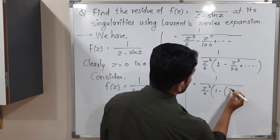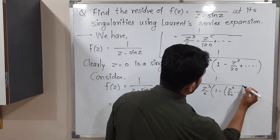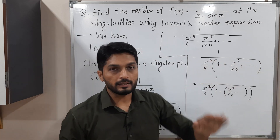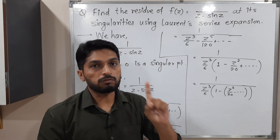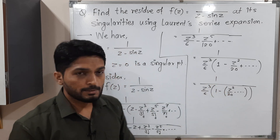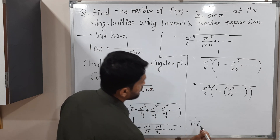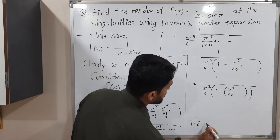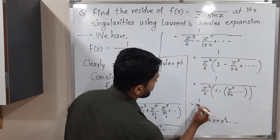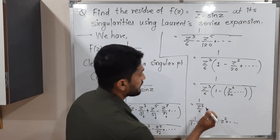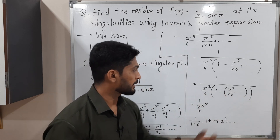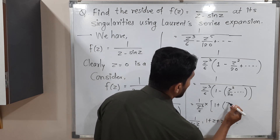We rewrite this as 6/z³ · 1/(1 − z²/20 + ...). Our plan is to use the standard series 1/(1−x) = 1 + x + x² + ..., where x here is the entire bracket z²/20 + ... Keeping 6/z³ outside, we apply this expansion to the bracket, giving 1 + (z²/20 + ...) + (z²/20 + ...)² + and so on.